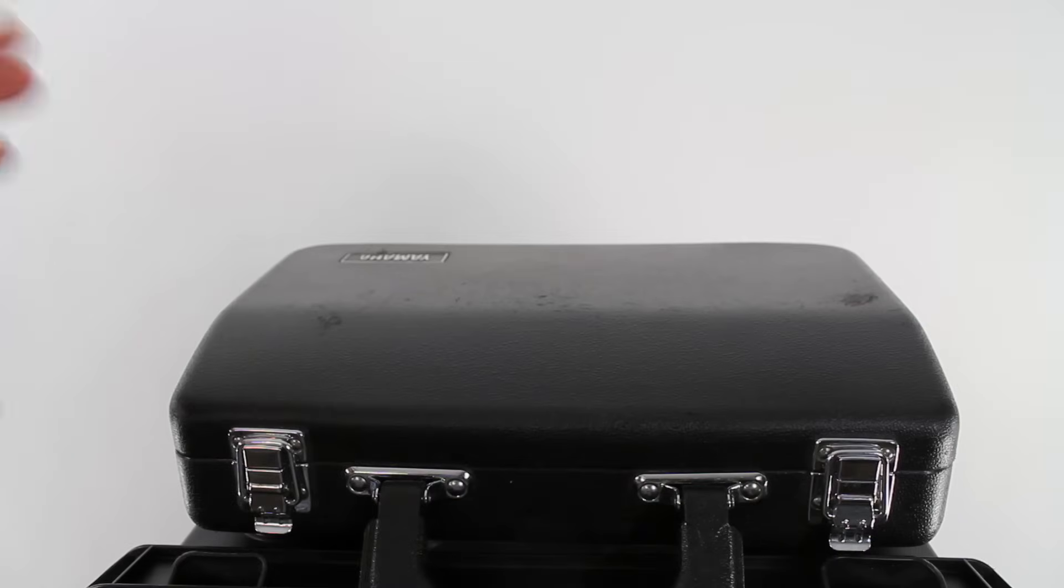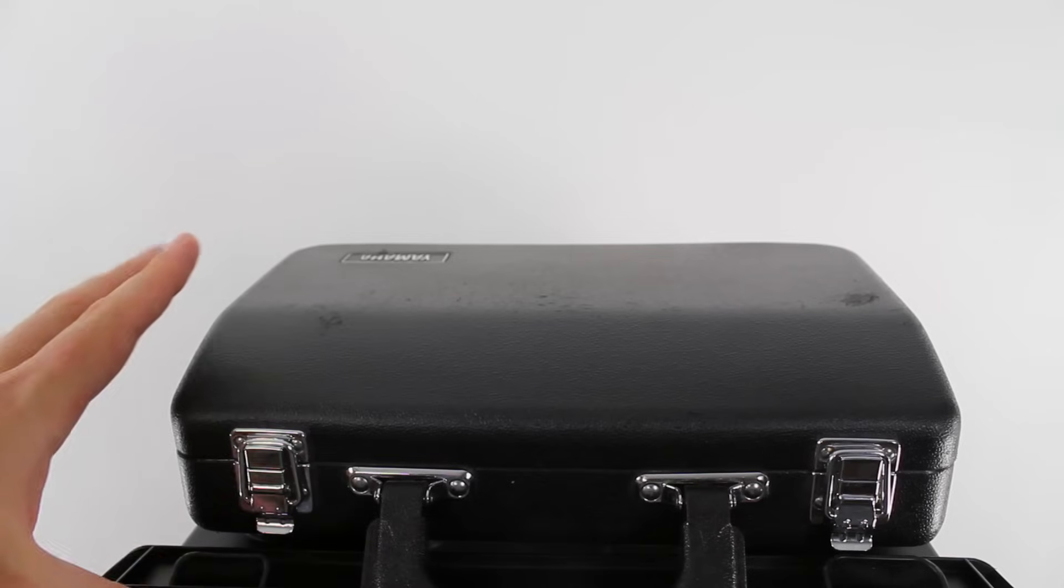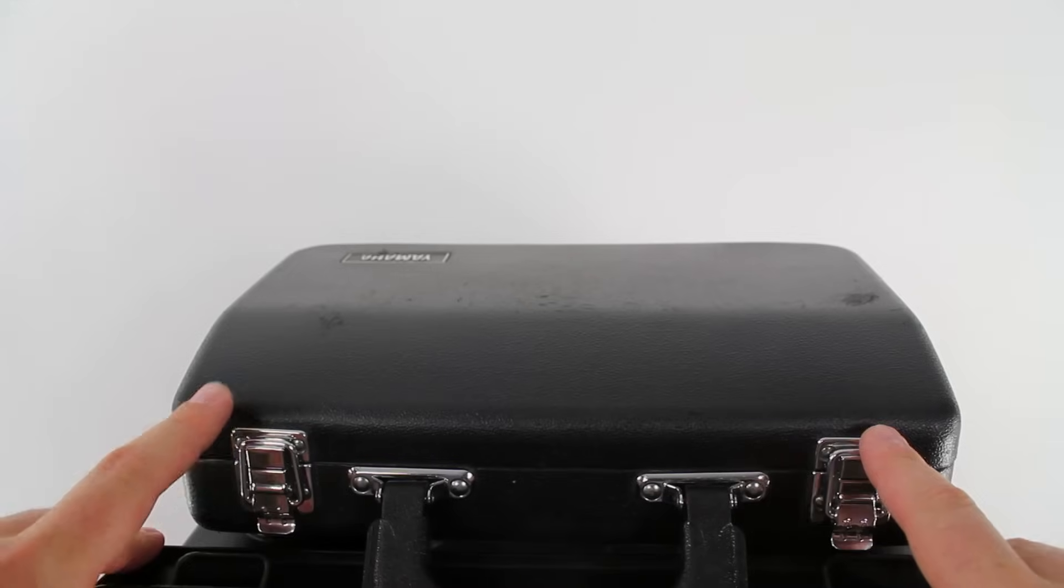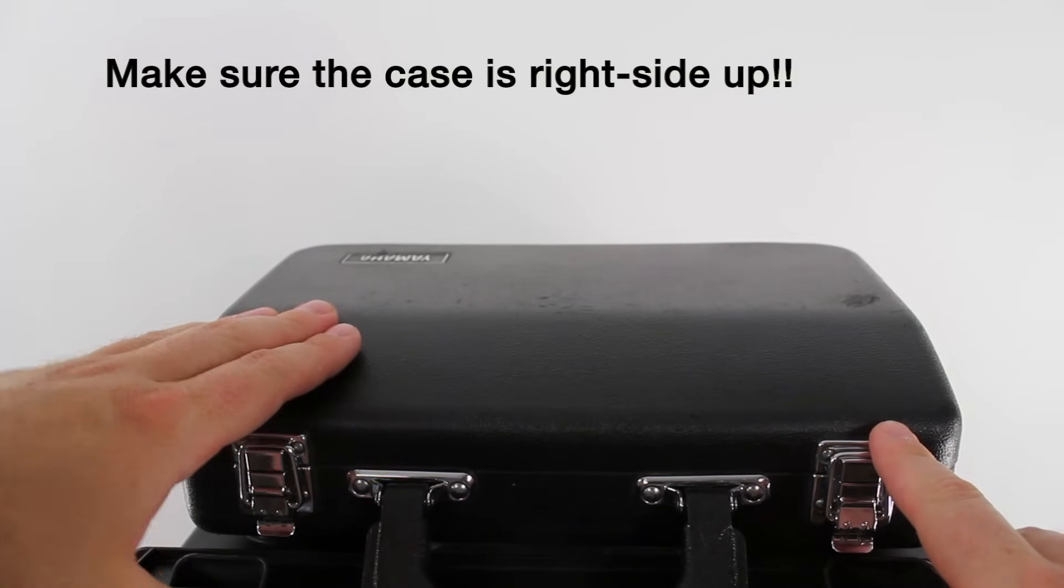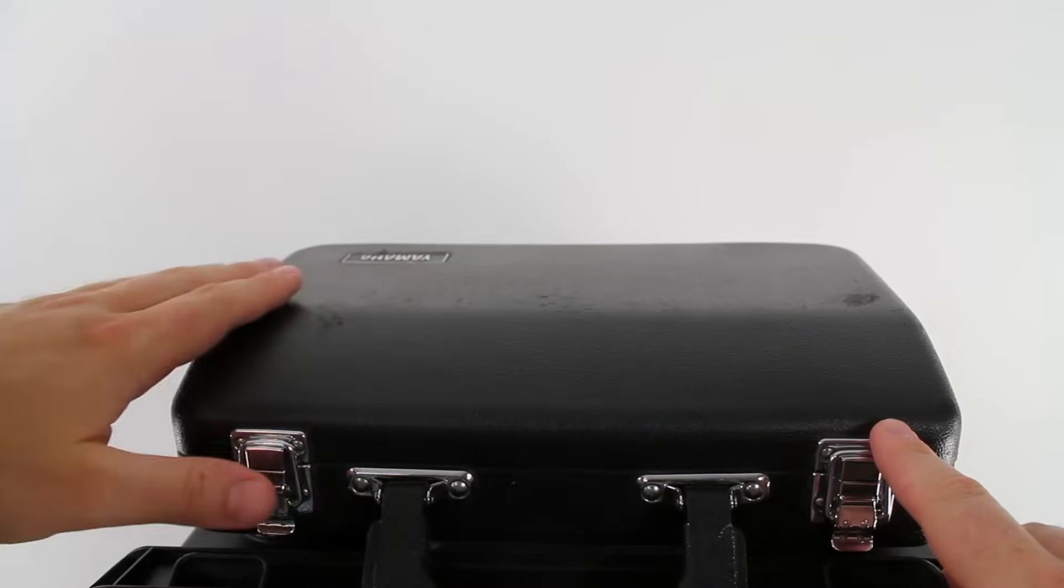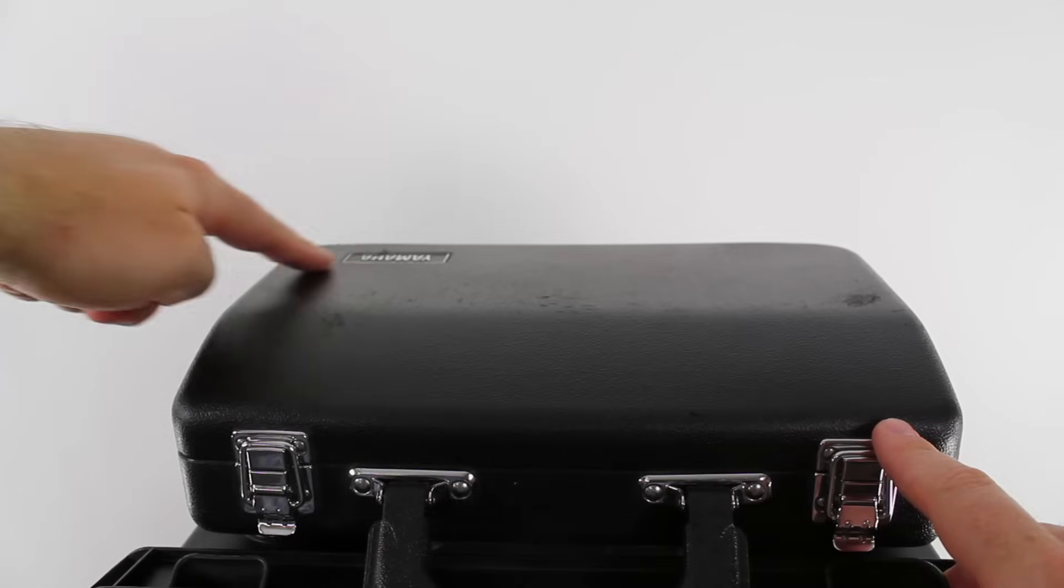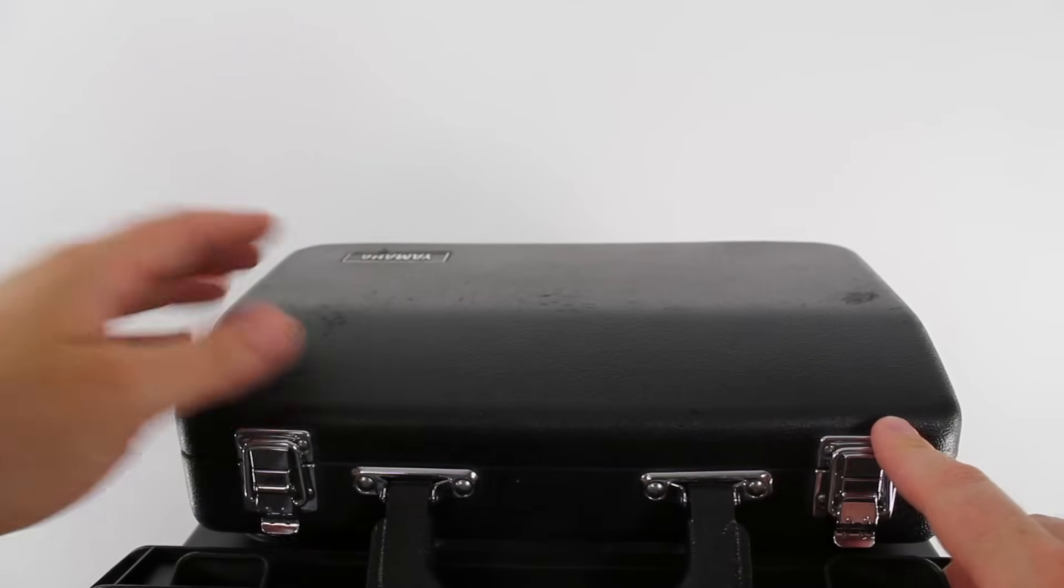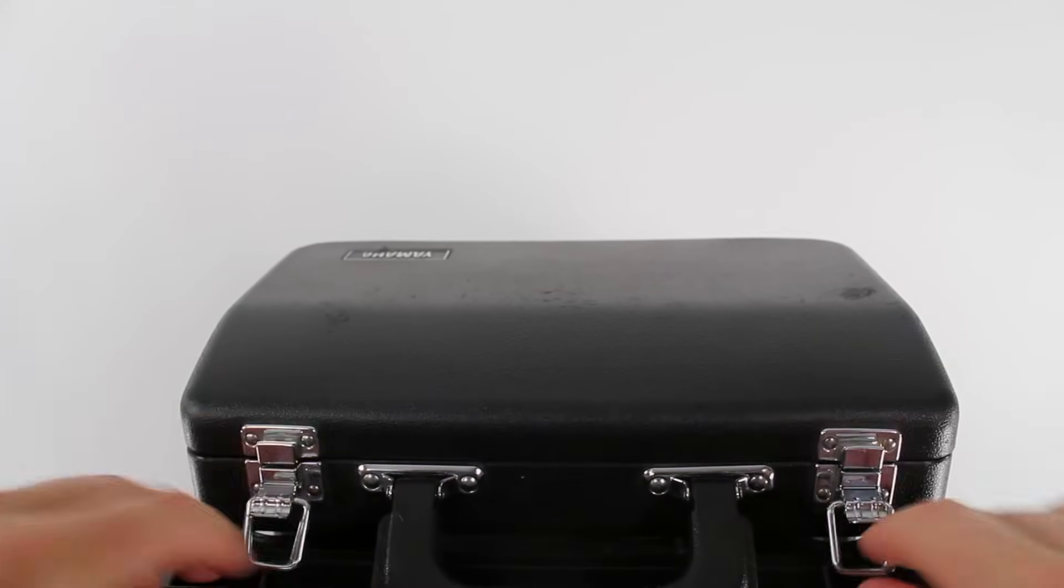So here we have our clarinet case. As we learned in our first lesson, we're going to place our clarinet case on a flat, sturdy surface. Before we open the latches, it's really important to make sure that your clarinet is right side up. We can tell usually by the label of our clarinet company right here on the top. So we want to double check that, and then we can open the latches and lift the lid.